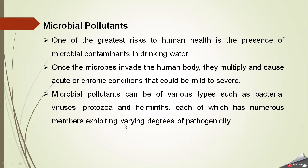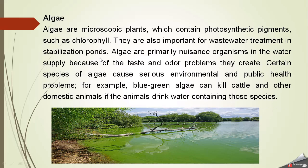Microbial pollutants can be of various types — bacteria, viruses, protozoa, and helminths — each with numerous members exhibiting varying degrees of pathogenicity. For example, algae are microscopic plants that contain photosynthetic pigments such as chlorophyll, giving water a greenish appearance. Algae are primarily nuisance organisms due to taste and odor problems. Certain species, such as blue-green algae, can kill cattle and other domestic animals if they drink water containing those species.